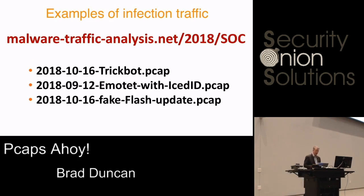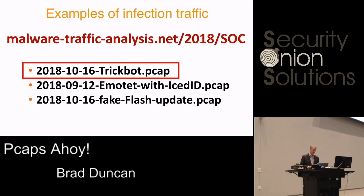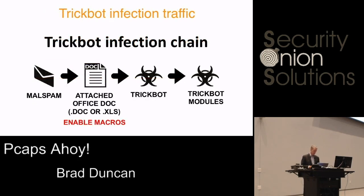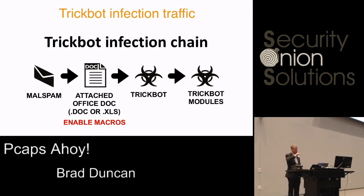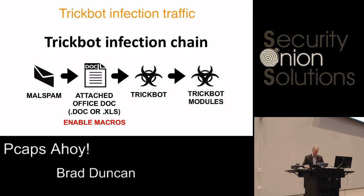Here's a typical TrickBot infection chain. You have a malicious spam email with an attached Office document — a Word doc or Excel spreadsheet — where you have to enable the macros, and then that downloads and installs TrickBot, which then downloads additional modules and does all sorts of things. This PCAP uses the domain joybridge.org on 172.16.5.0/24, with the domain controller on .5 and the infected Windows host on .216.